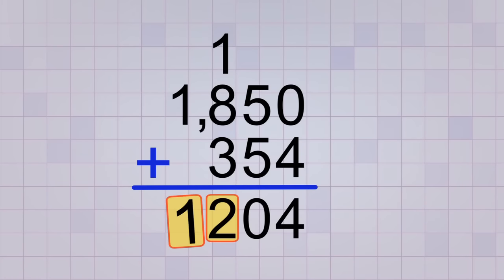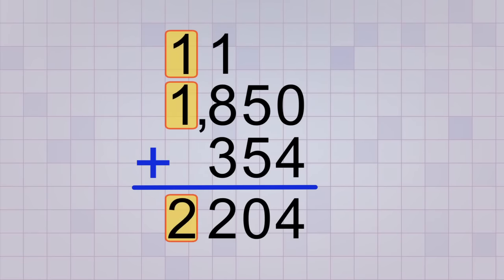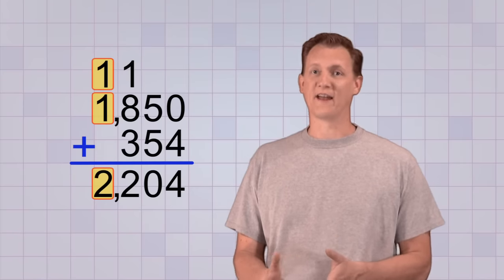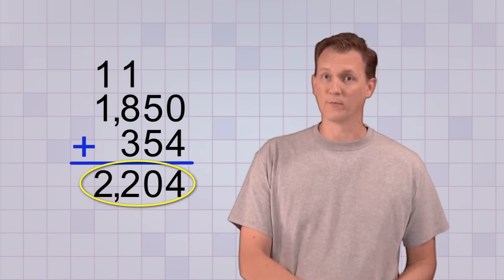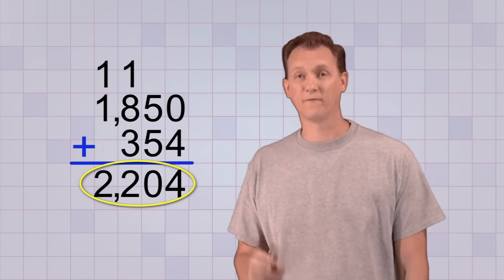So we carry the 1 up to the top of the next column and leave our 2 where it is in the hundreds place of the answer. Just one more column to add up now. In the thousands place, we have 1 plus 1 equals 2. Okay, we've added up all our columns, so the answer to our addition problem is 2204.